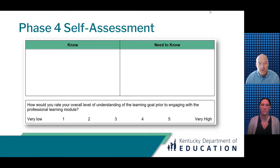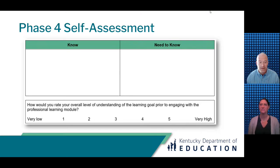We will use a Know, Need-to-Know approach for activating background knowledge. First, note things you may already know about our learning goal, perhaps using the title and steps of Phase 4 for added insight. This can include hunches you may have as well. Next, infer things that may be important for you to find out based on our learning goal. Both what you may know and what you may need to know can be recorded in the table on page one of your participant handout.